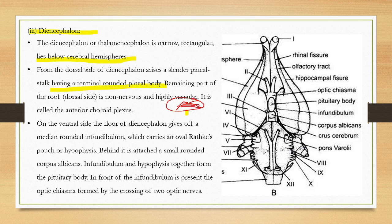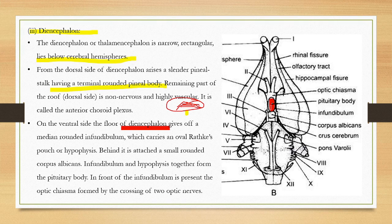The choroid plexus is a network of highly vascular structures. Blood vasculature is used in the plexus. The floor of the diencephalon gives a median rounded infundibulum, which carries an oval Rathke's pouch called the hypophysis.